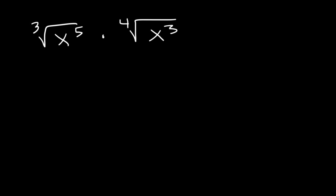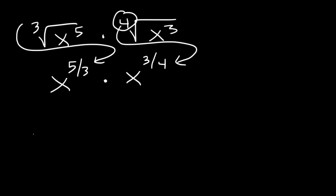What we need to do is convert this expression from radical notation to exponential notation. So this is x to the 5 thirds times x to the 3 fourths. The index number always goes on the bottom. Now, when you're multiplying by a common base, you need to add the exponents.